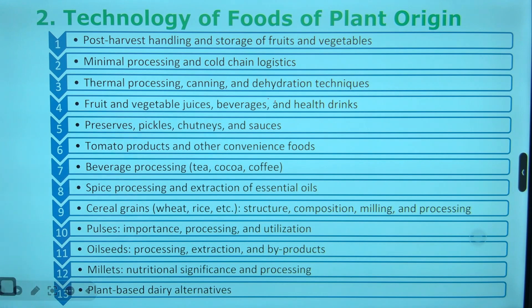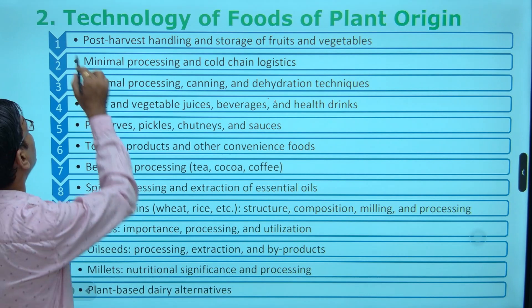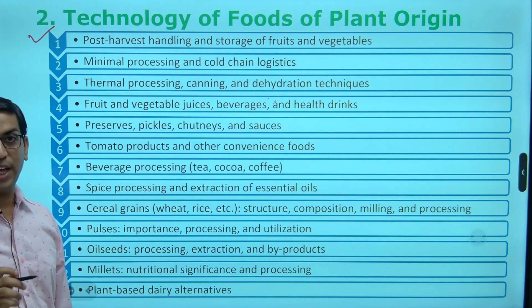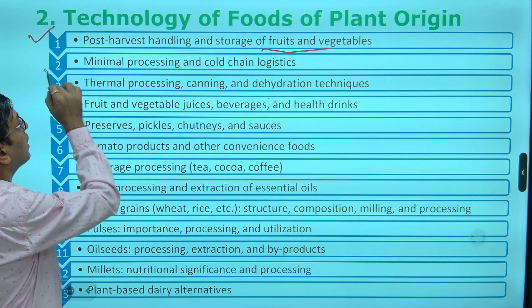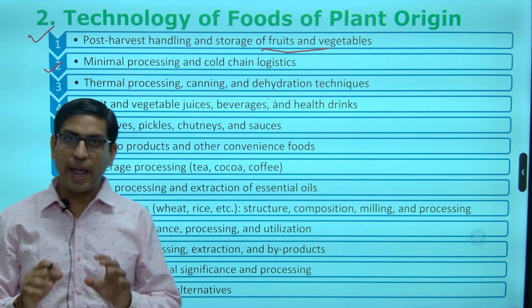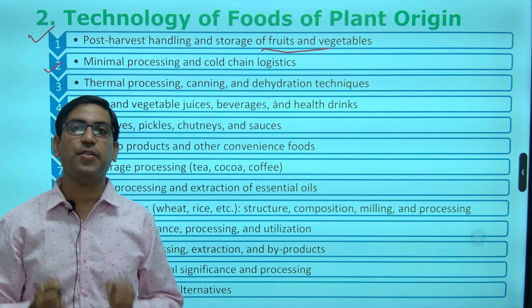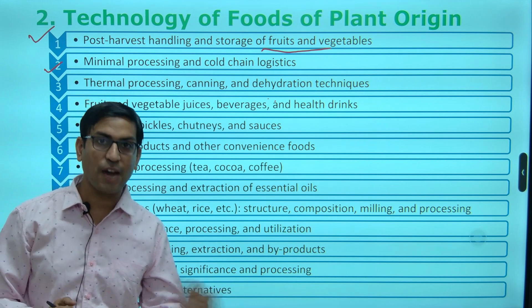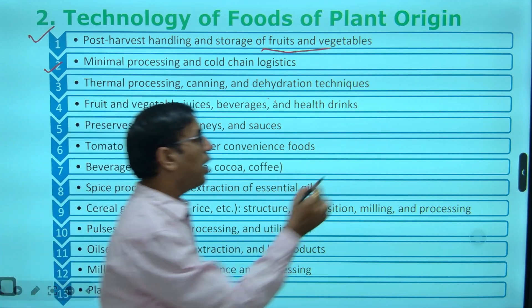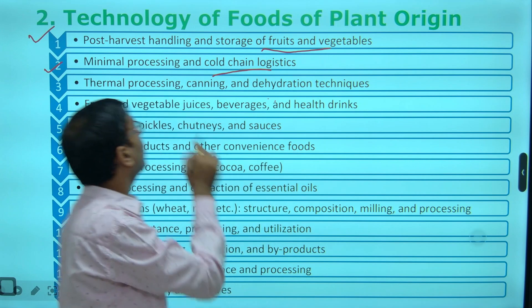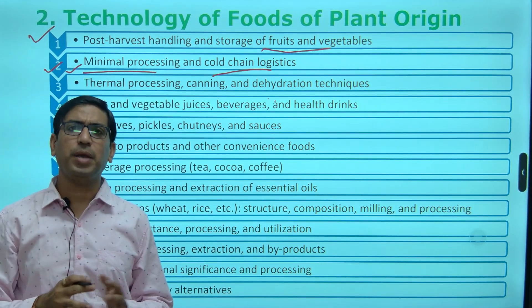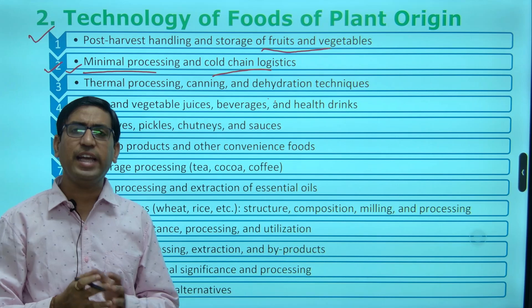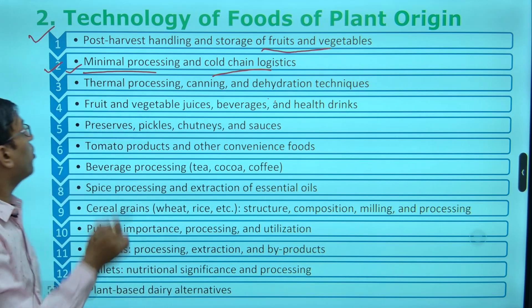Next we deal with the topic of technology of food with concern to plant origin. When we are collecting fruits and vegetables from harvesting, minimal processing is required — it could be waxing, salting, grading, or cleaning. These are important from that point of view.